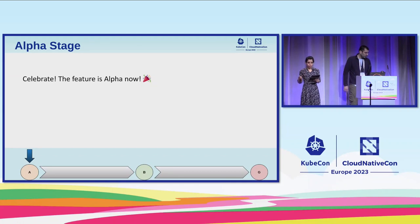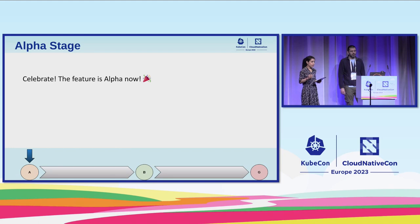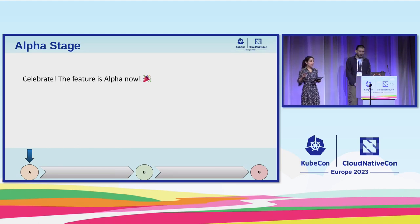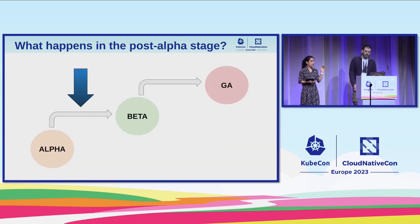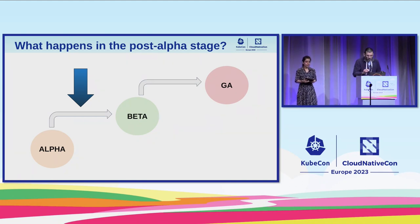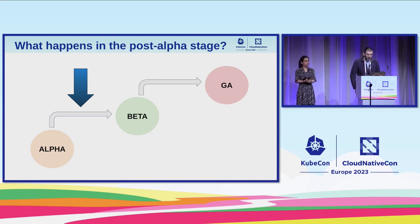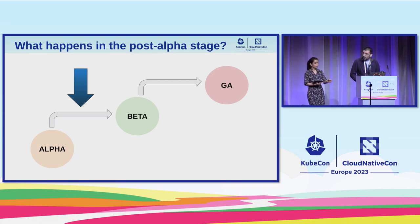Once we have gotten the proposal merged, we have relevant PRs merged, and the feature has made it into the alpha stage — it's time to celebrate. The next step is to keep iterating over the feature and making sure it goes through a more stable stage. My colleague Francesco is going to walk us through how the feature goes from beta all the way to GA. Our feature is alpha, and now it's time to plan for the next step and consolidate it — the next logical step is going to beta.